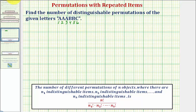So looking at our example again, because there are six letters, we begin with six factorial, but then because there are three A's, we divide by three factorial, and because there are two B's, we also divide by two factorial. Now because there's one C, we could divide by one factorial, but one factorial equals one, it would not change the result.